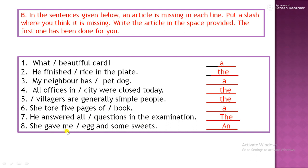She gave me egg and some sweets. So here, A, E, I, O, U. Five vowels are there. So it is vowel. So you will use article N.